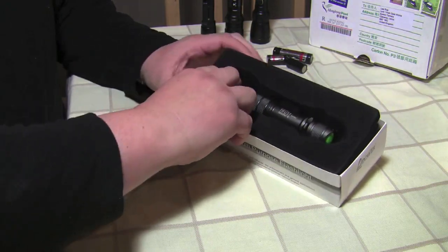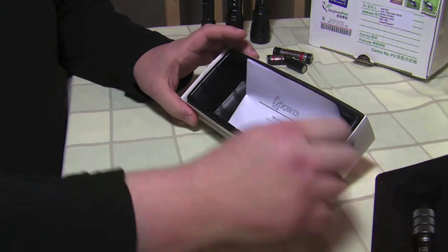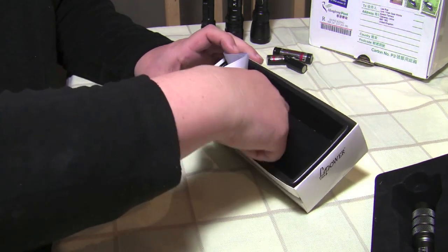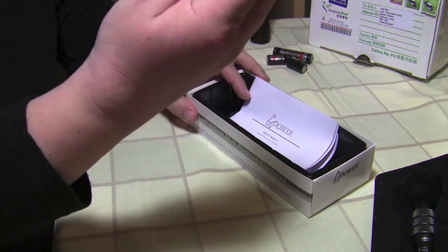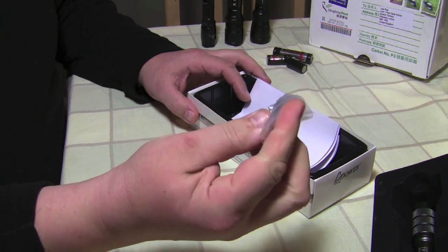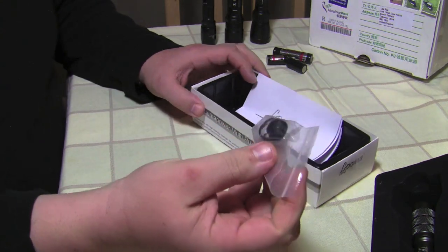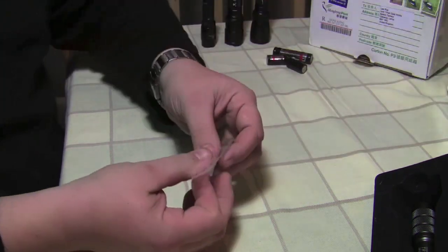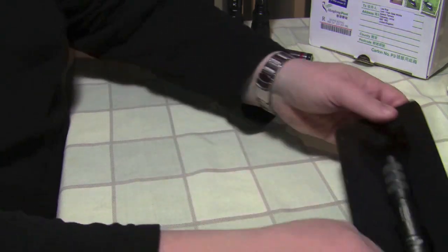First of all obviously you have the light, the instructions, and the small pack of seals and switch boot which we'll leave there for now.